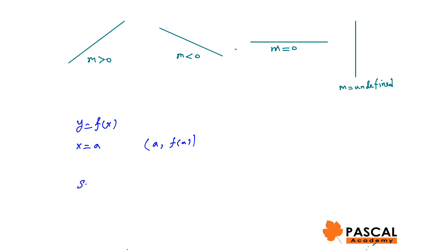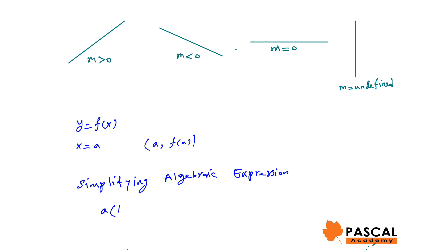Simplifying algebraic expressions: we usually use the distributive law, a times (b plus c) equals ab plus ac. We know ab and ba are the same by the commutative law, and a times bc equals abc, where a, b, and c are algebraic expressions.